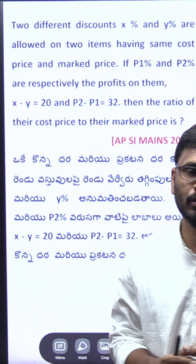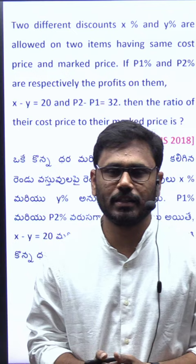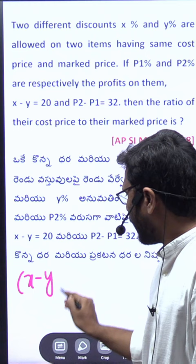This is an APSI 2018 main slot question — exactly a similar question. You are simply going to use the ratio of cost price to market price equals the discounts difference to the profits difference.